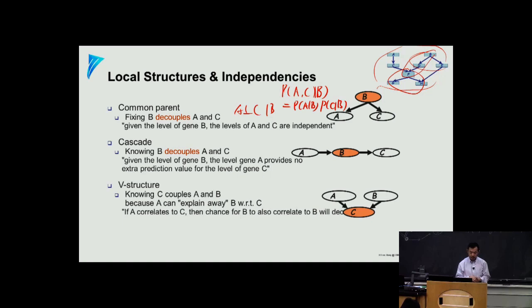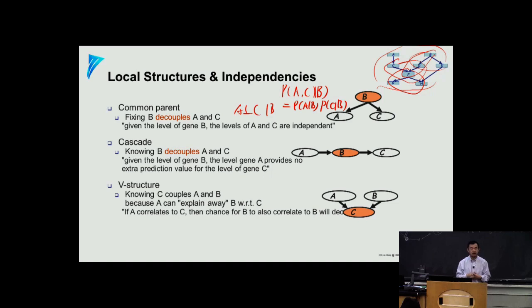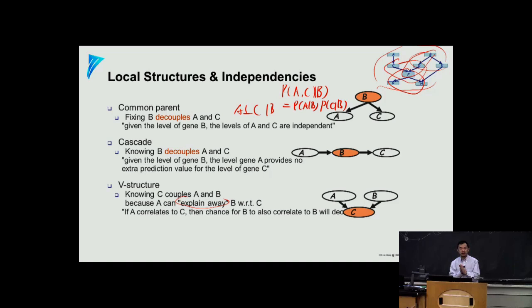The third one is a little bit trickier — it's the V-structure. Here, A and B are originally not coupled. But once you observe a shared descendant from these two nodes, suddenly they become coupled. That's a very interesting dependency structure known as the V-structure, or the explain-away structure. Let me give you a more intuitive insight into why this is interesting and why this phenomenon needs to be modeled.